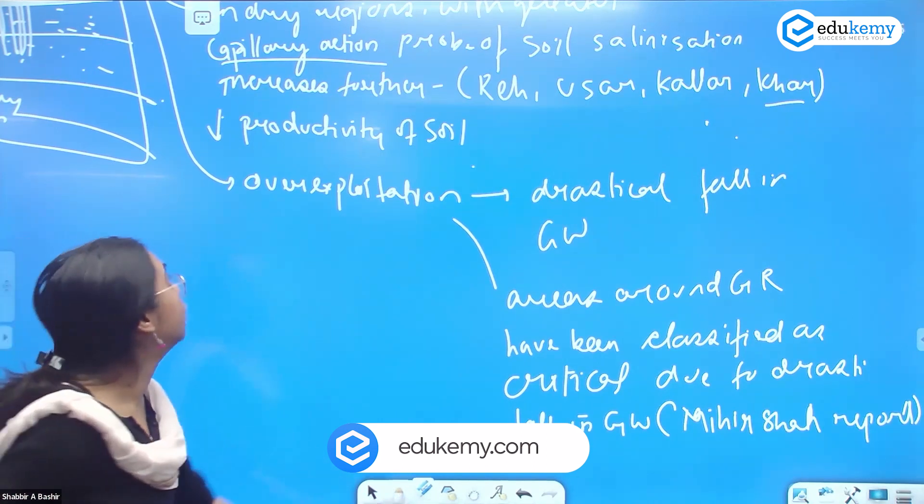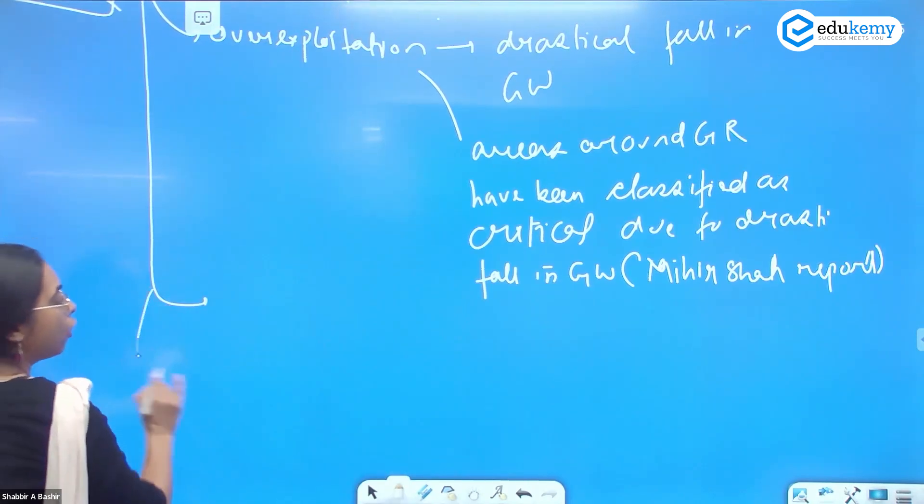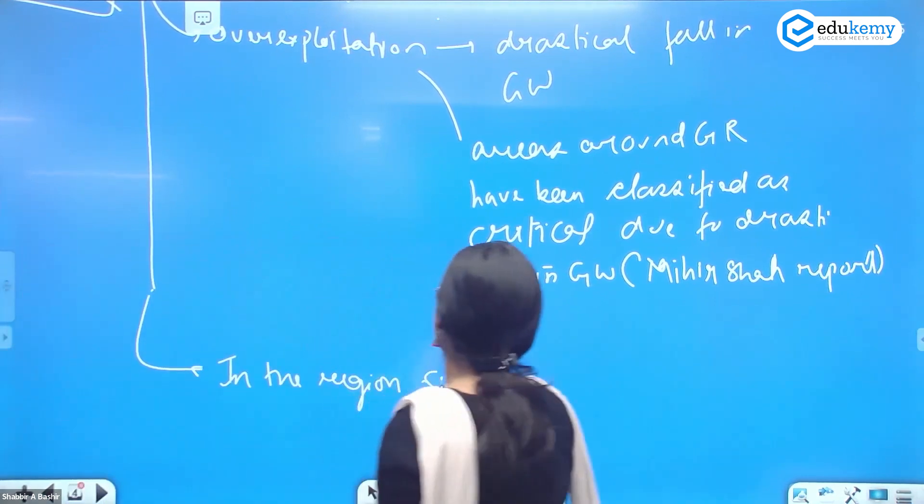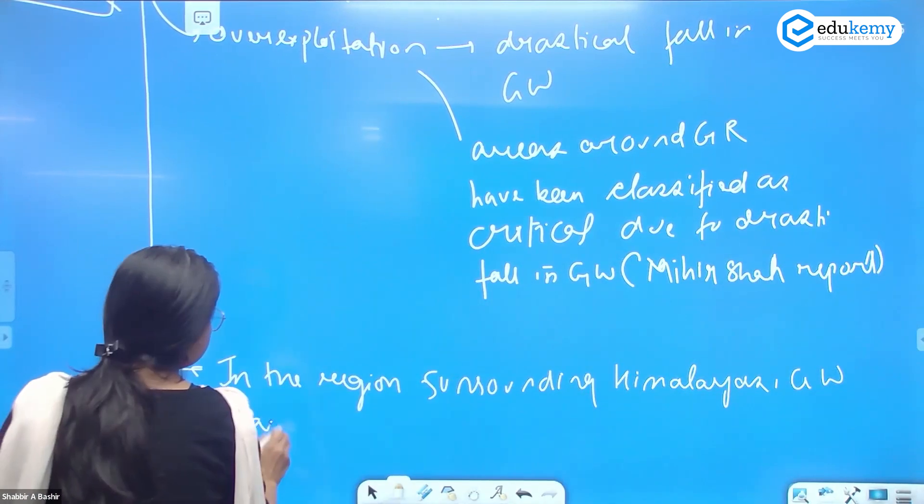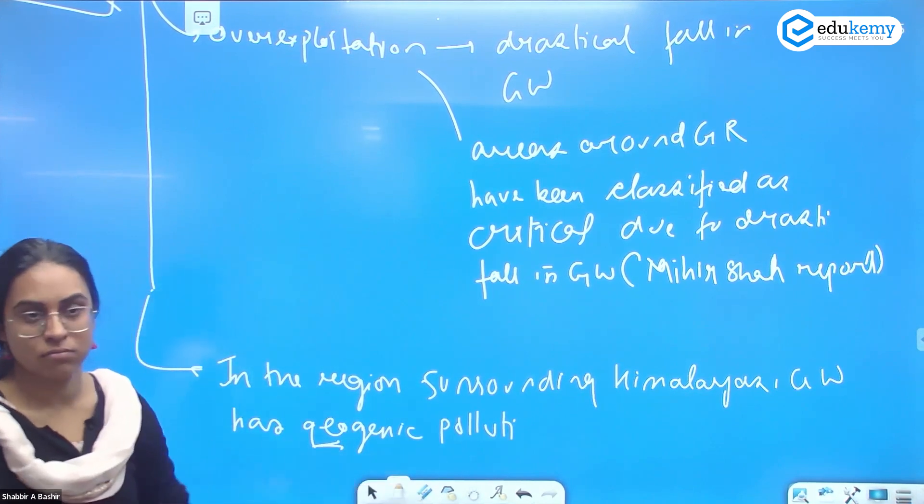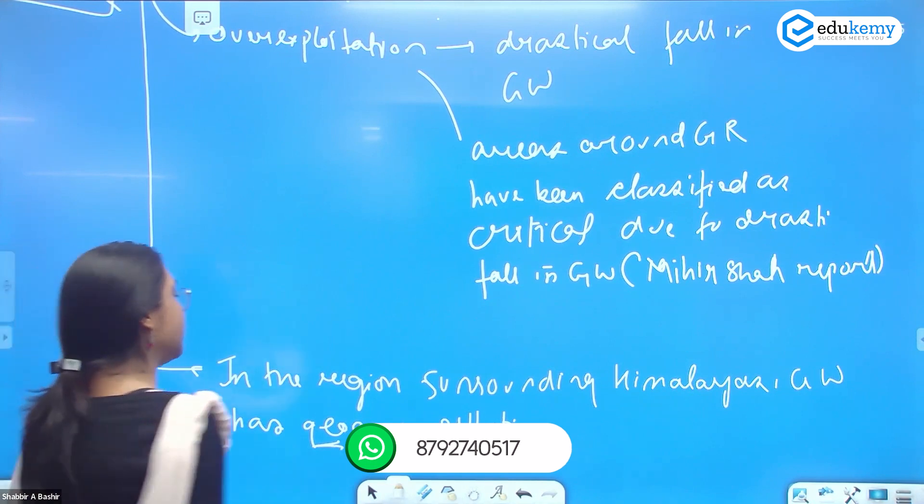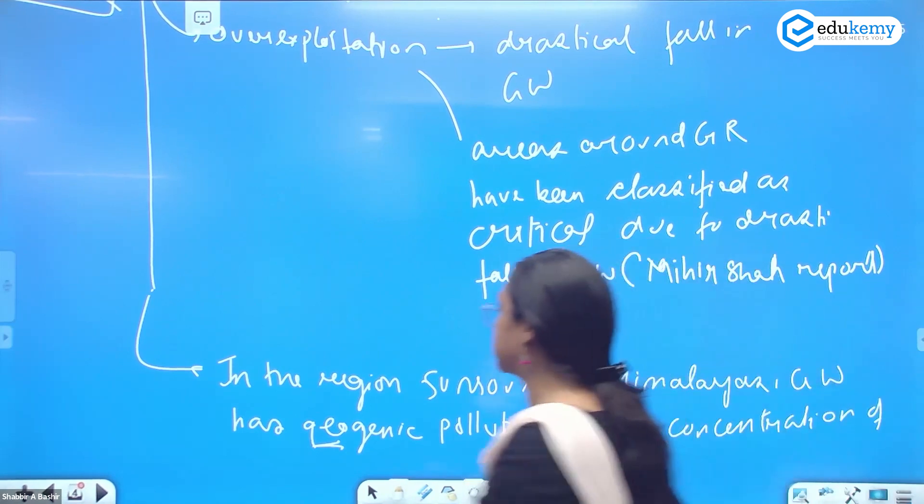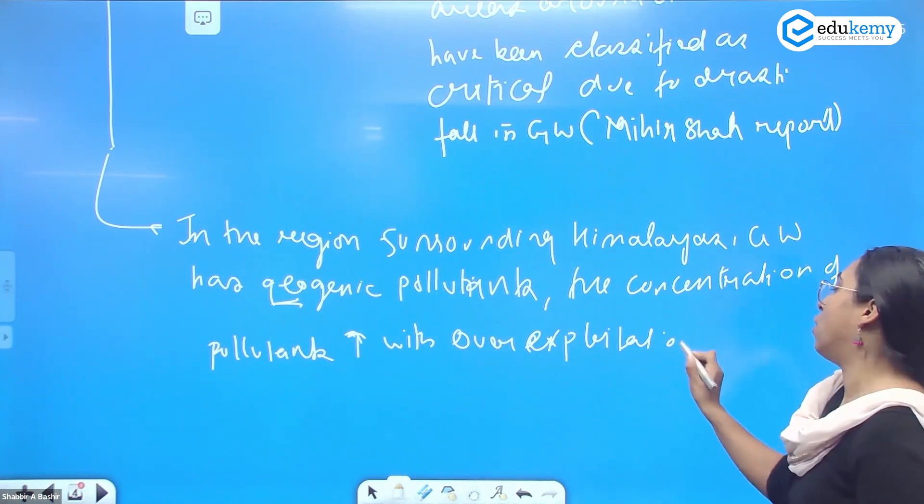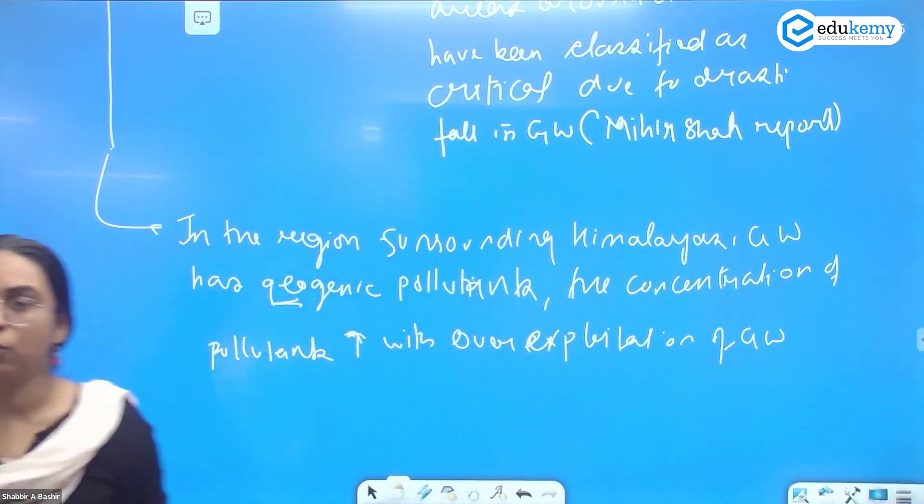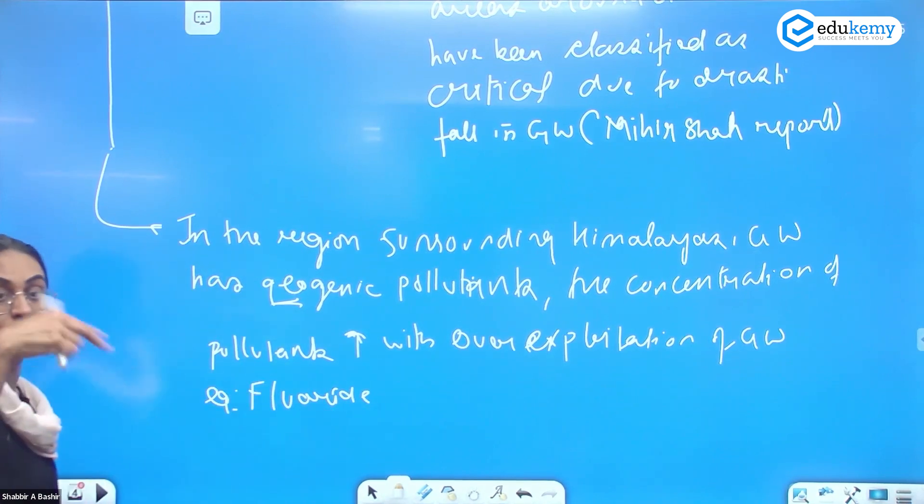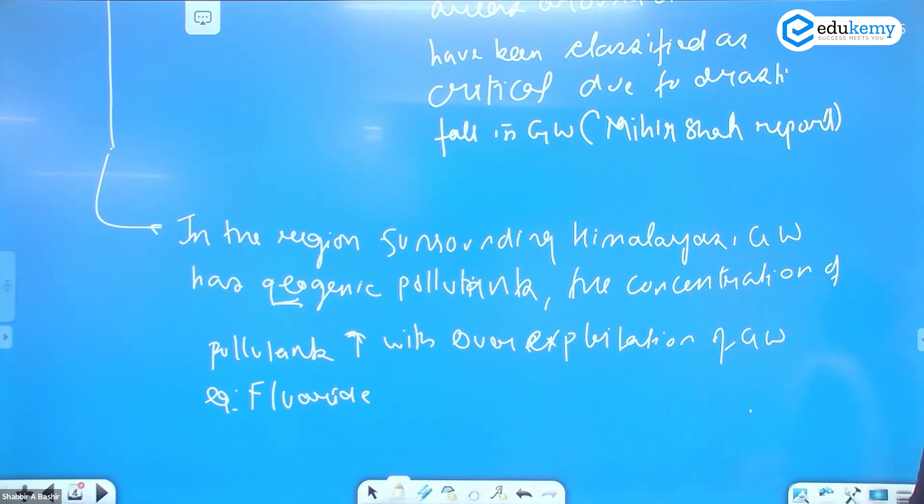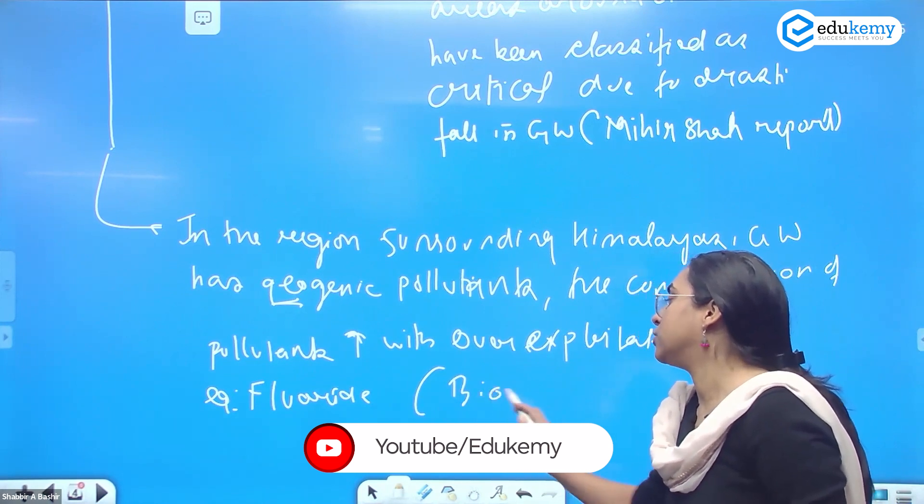One more point of demerit in well and tube well: in the regions surrounding Himalayas, the groundwater has geogenic pollutants. Geo means earth. The concentration of pollutants increases with over-exploitation of groundwater. An example can be fluoride, which is a geogenic pollutant. Arsenic is generally seen around West Bengal, and fluoride around the green revolution area. Because of over-exploitation, the concentration increases - bioaccumulation and biomagnification.